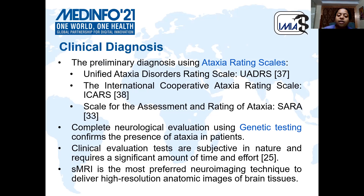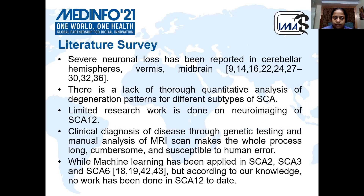These tests tell only about the severity of the disease but they do not tell us about which part of the brain has been affected. So in order to see that, structural MRI is being used as the most preferred neuroimaging technique. In literature, several neural analyses have been reported in cerebral hemispheres, midbrain, etc., but there is a lack of thorough quantitative analysis of degeneration patterns for different types of SCA-12. Limited work has been done in neuroimaging for SCA-12.